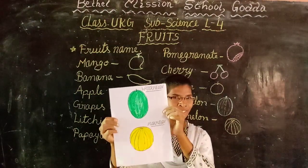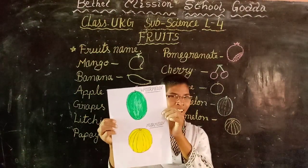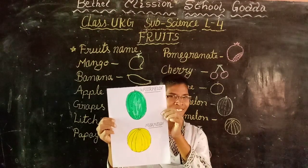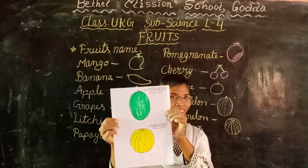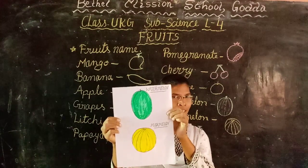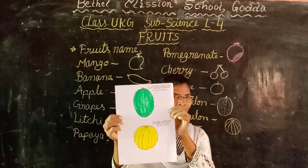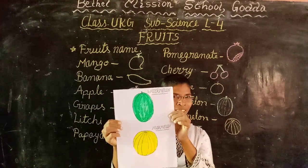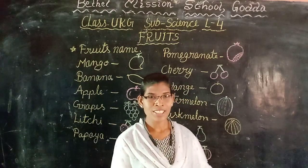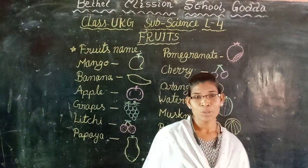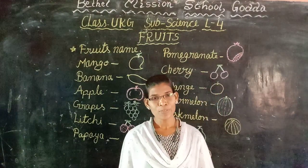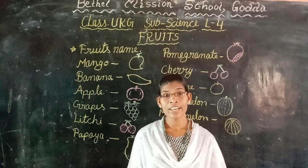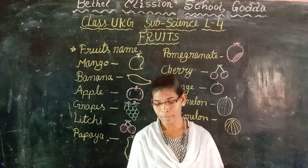Next picture. What fruits are there? Watermelon and muskmelon. So children, now you have seen the pictures. Now you are able to recognize the fruits. So we will learn the spelling of the fruit names.